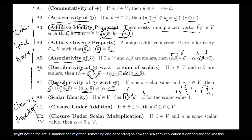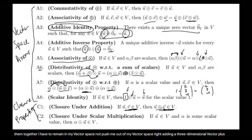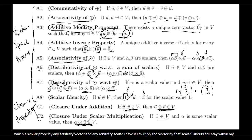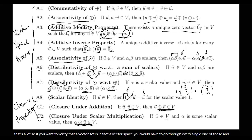The last two properties are closure properties. You have to be closed under addition, meaning if I take any two vectors in my vector space and add them together, I have to remain in my vector space. Adding a three-dimensional vector to another three-dimensional vector should not give me something four-dimensional. You also have to be closed under scalar multiplication — taking any arbitrary vector and any arbitrary scalar, multiplying them, should still keep you within your vector space.